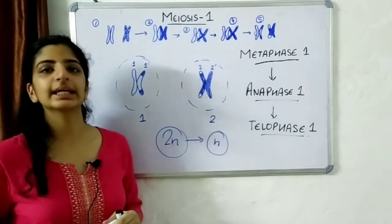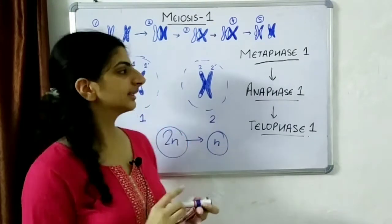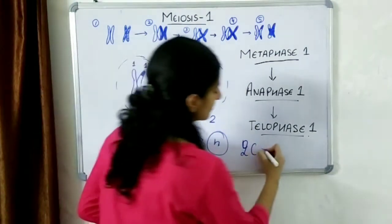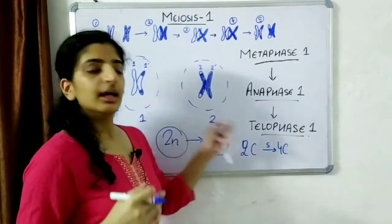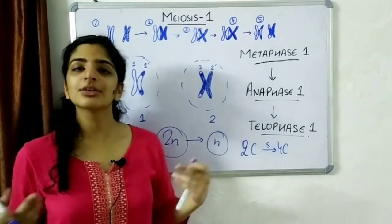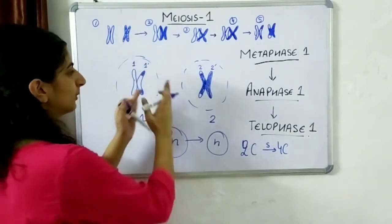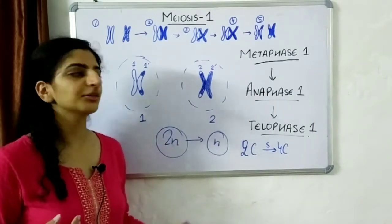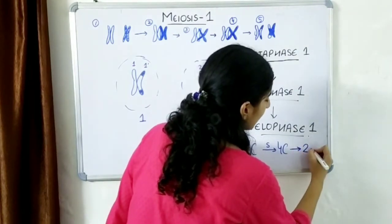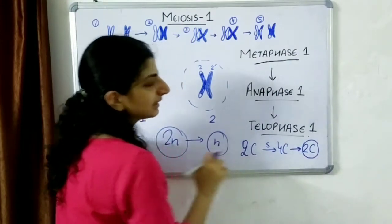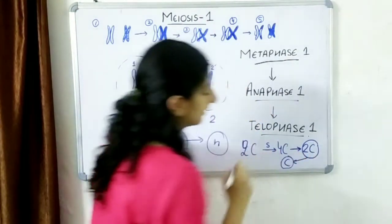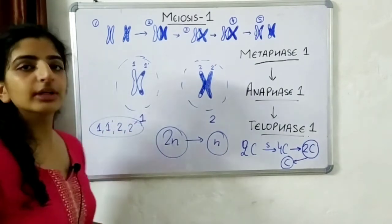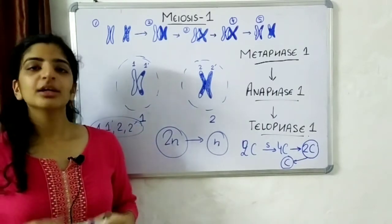One important thing to notice is that during S phase, all genetic material duplicates. So if a cell initially had 2C content of genetic material, after S phase it will have 4C. After Meiosis 1, we have separated the homologous chromosomes and each cell has half the number of chromosomes, but the genetic material has gone from 4C to 2C — it is still double. We need to reduce it to 1C, meaning each cell should have chromosome 1, 1', 2, or 2' — not a pair of them. This is why we need Meiosis 2.